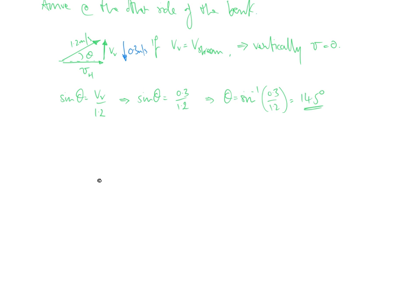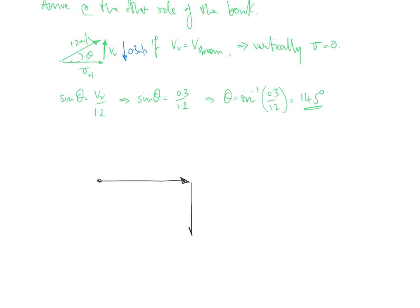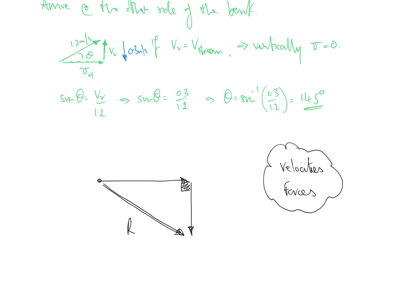In most cases, you will have a resultant — this could be velocities, forces, what have you. With right-angle triangles and angles, the vertical component is R sine theta and the horizontal component is R cosine theta. We're going to use those extensively in the next few examples of forces.